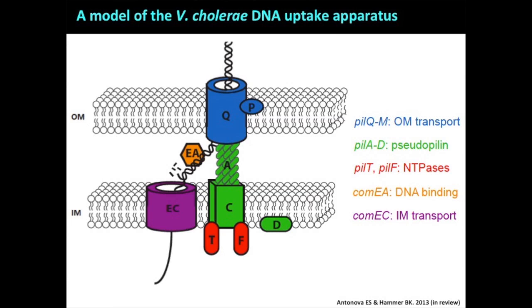Once in the cytoplasm, bacteria can chew that up and use it for food when they're starved, or use it for repair of DNA like Francesca Storici studies. But the most compelling interpretation of why bacteria take up DNA is because if that sequence is of sufficient identity to get a recombination event, you have now horizontally acquired a new piece of DNA — new genetic material — that may allow you to do new tricks. For example, if that DNA encodes an interesting virulence factor or a toxin, you've got new features and new behavior.